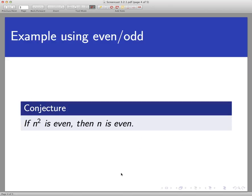So let's look at an example of this using simple notions of evenness and oddness. And here's a conjecture. If n squared is even, and n is an integer here, I should have said that. If n squared is even, then n is even.